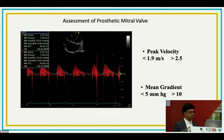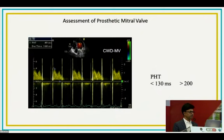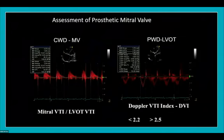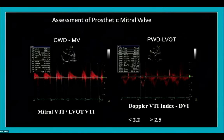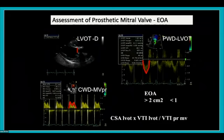In my patient, peak gradient averaged 1.9, mean gradient averaged 6, and pressure half-time was only 50 ms — well below the 130 ms threshold for significant stenosis. Prosthetic valve VTI was 52 and LVOT VTI was 27, giving a DVI of approximately 2 — borderline normal. Effective orifice area by continuity equation was also calculated. All parameters indicated a well-functioning prosthetic mitral valve.